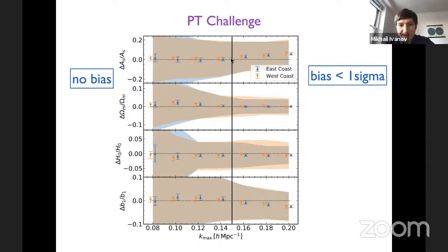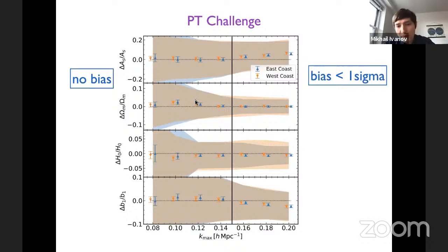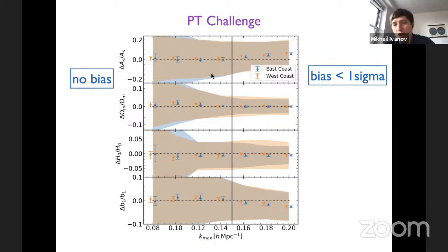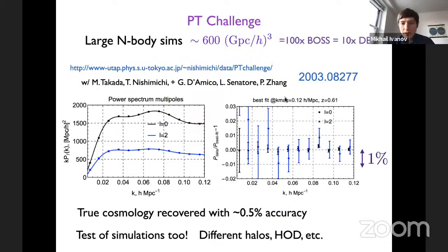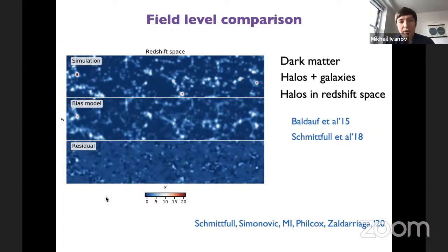We decided where to stop by fitting at many k_max values; when predictions started deviating at higher k_max we cut there. I'm showing results for cosmological parameters h_0, Ω_m, and the primordial power spectrum amplitude. The small error bars come from the full simulation volume, and the large shaded region is rescaled to match the BOSS volume. In the PT challenge we stopped at roughly k_max ~ 0.15–0.2 h/Mpc. For BOSS, with its smaller volume, we can go to higher k_max with statistically insignificant errors.